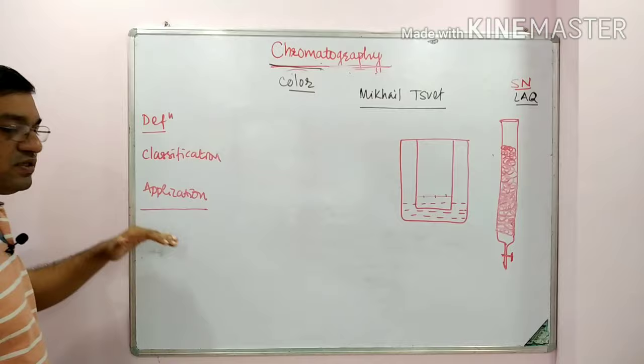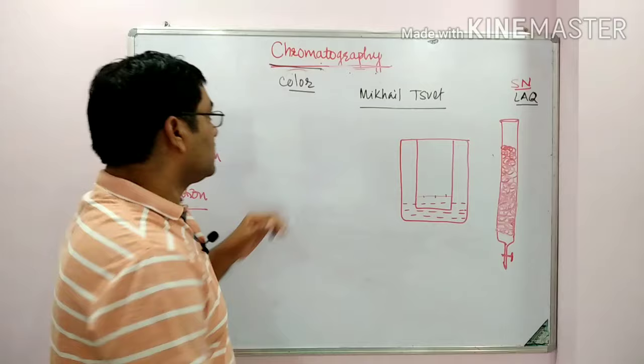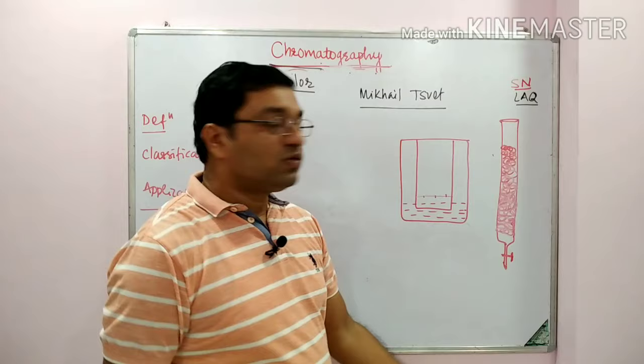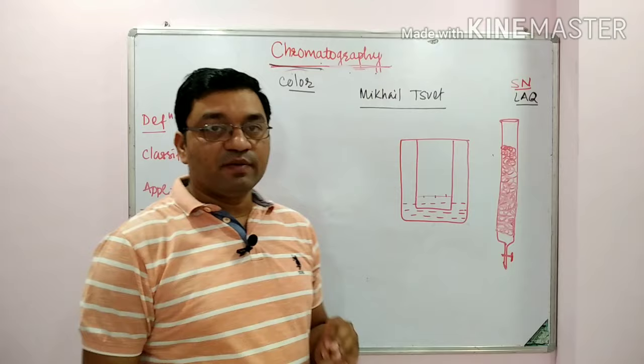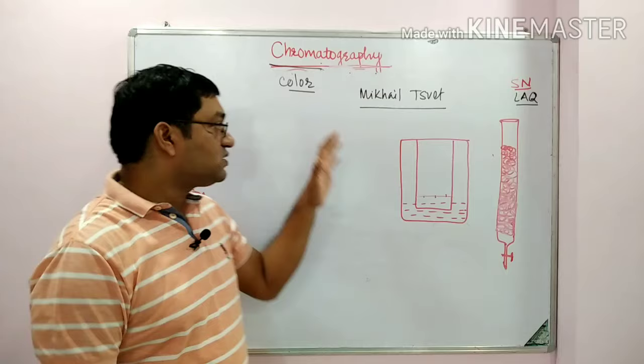What is the literal meaning of chromatography? Chroma means color and graphy means writing, so it is 'color writing.' This technique was introduced by Michael Tswett for the separation of the plant pigment chlorophyll, which is why the name chromatography was given.